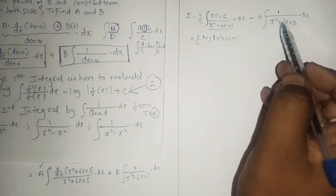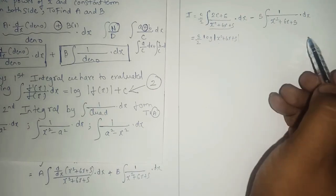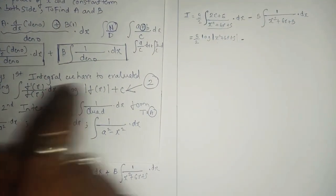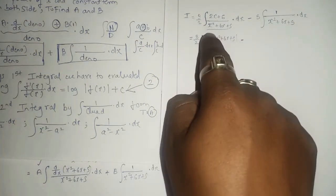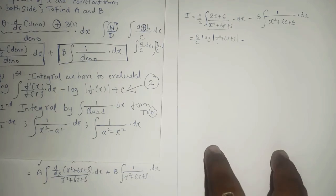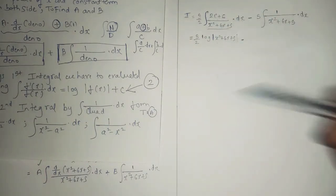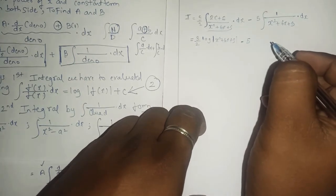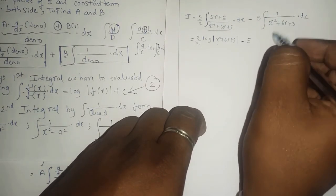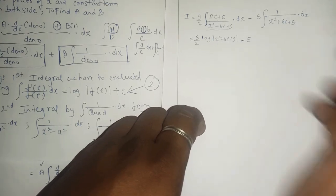Integration of the first part is done; integration of the second part is still pending. Find the integral of the second part first, then at the final step write plus c. For the second integral — 1 upon x squared plus 6x plus 5 — check that the coefficient of x squared is 1 and the symbol is positive. Then apply the third-term method: half times coefficient of x, which is half of 6 equals 3, and 3 squared is 9.